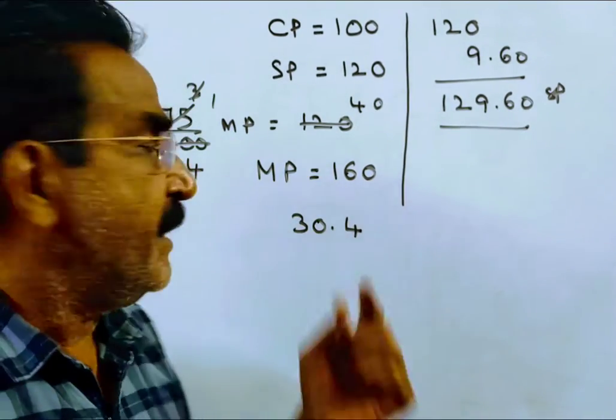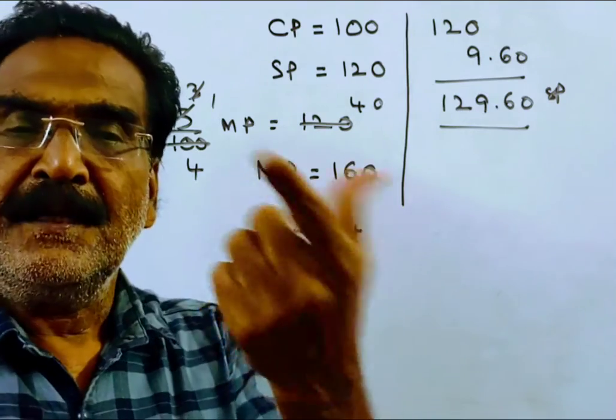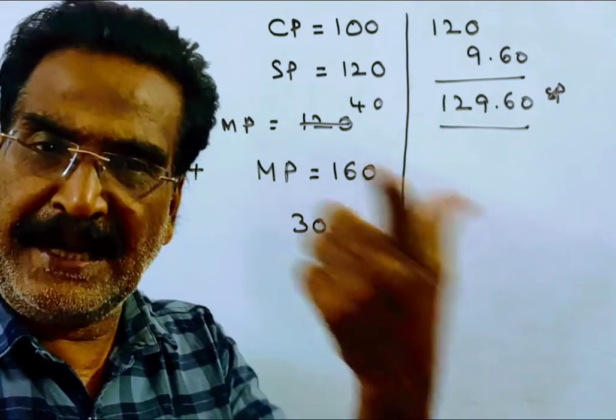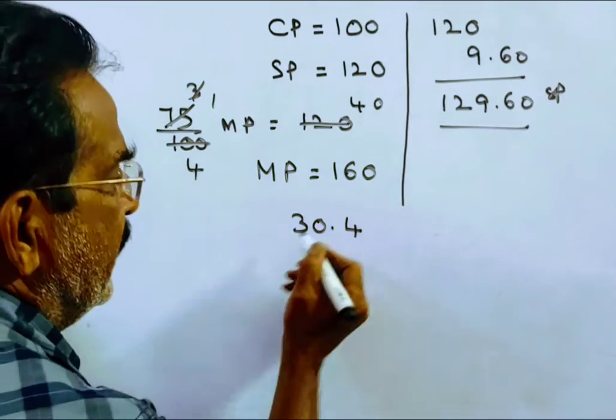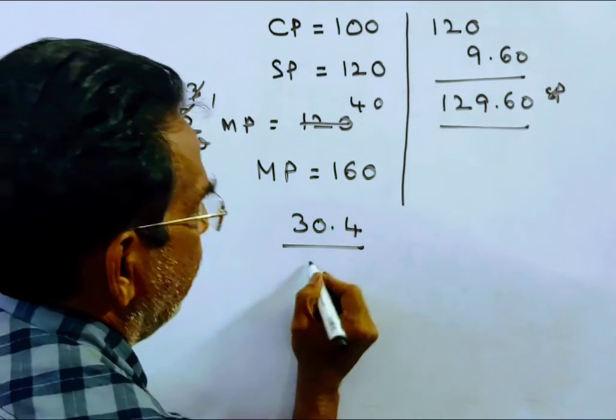Now the discount percentage is discount divided by market price times 100, which simplifies the calculation.